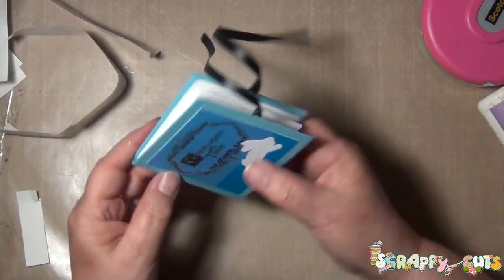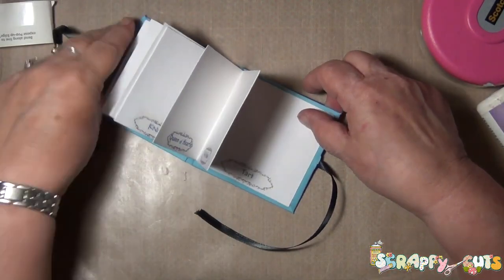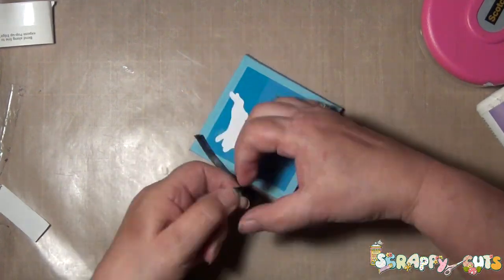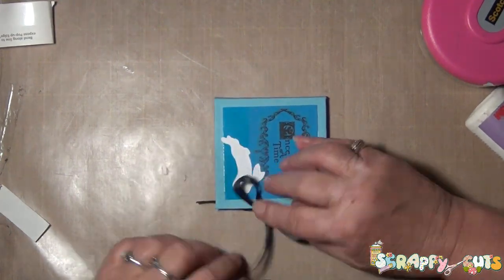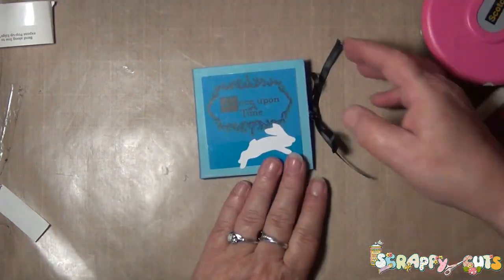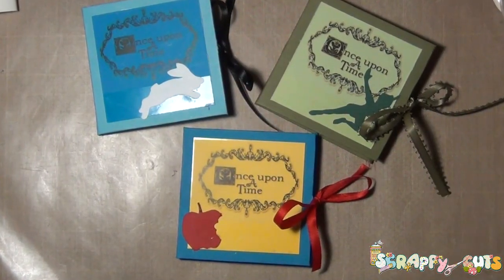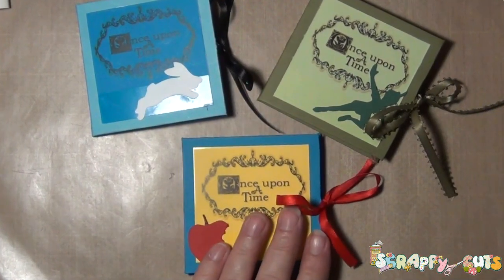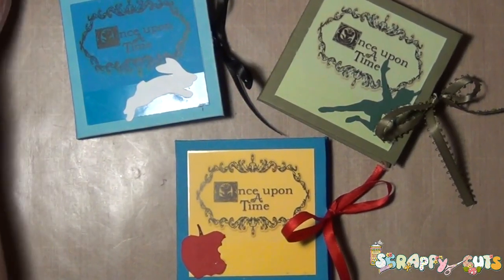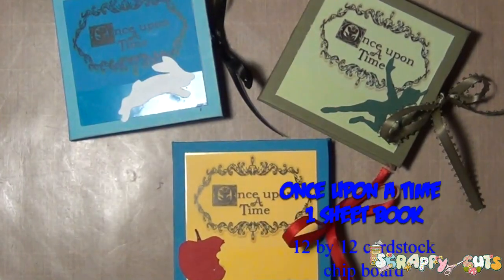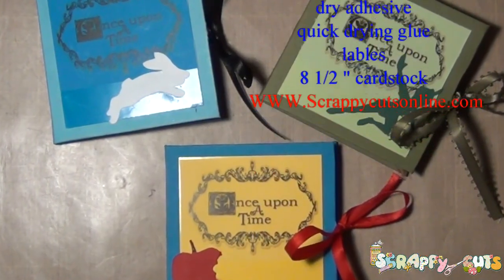I chose to make these the Once Upon a Time theme. So I have Peter Pan and I have Alice in Wonderland and Snow White. And you can find these files at my website at www.scrappycutsonline.com. We will also be having these books at the Scrapbook Expo in San Diego, May 4th and May 5th, 2012. Stop at our booth, say hi, and do one of our make and take projects. Hope to see you there. Bye.